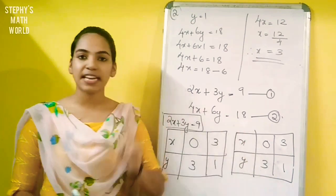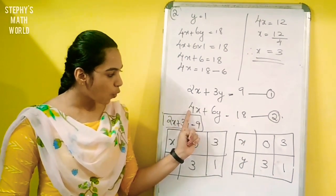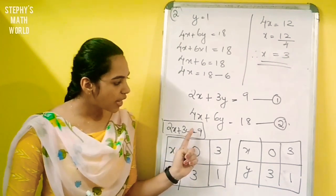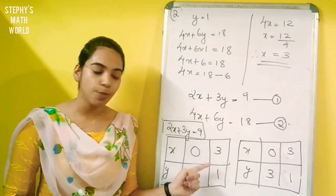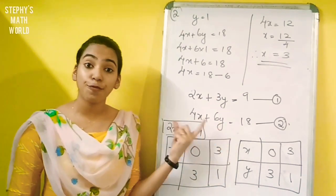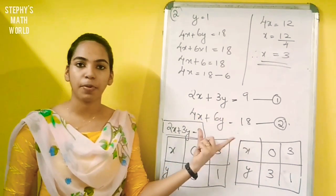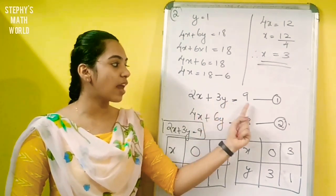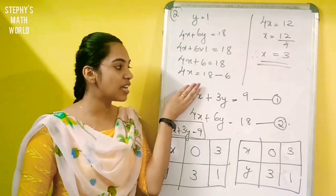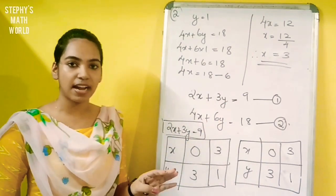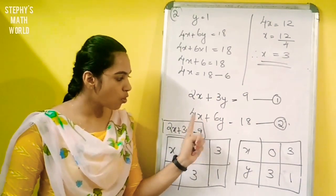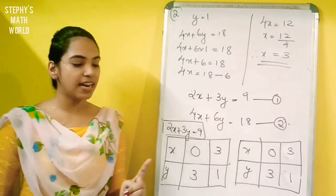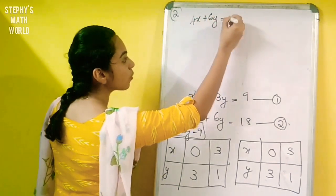Now in equation 2, 4x plus 6y is equal to 18. We have 4, 6, and 18 as coefficients. If we divide the whole equation throughout by 2, we get 2x plus 3y is equal to 9, which is the same as equation 1.